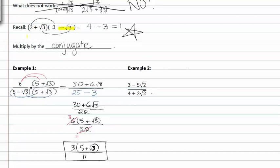In example two, we're again going to multiply by the conjugate in both the numerator and the denominator to clear the radicals. Since four plus two root two is two terms, I'm going to multiply by the conjugate, which is four minus two root two. And in the numerator the same thing has to happen, so it's like multiplying by a funny-looking one.